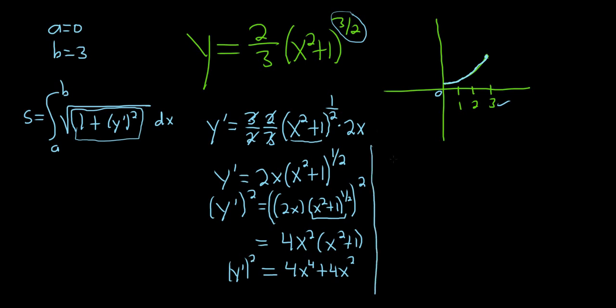So this is y prime squared. We're almost there, we need 1 plus y prime squared. So let's go ahead and write that down. 1 plus y prime squared is equal to 1 plus, well we just worked out this, so this will be 4x to the fourth plus 4x squared. And we have to take the square root of this and integrate it. So there's a trick. Let's write it with the highest exponents first, so 4x to the fourth plus 4x squared plus 1.